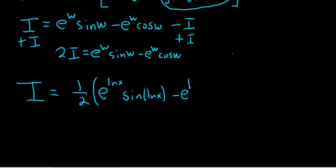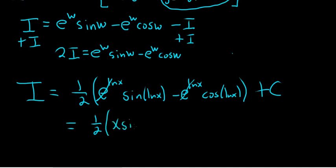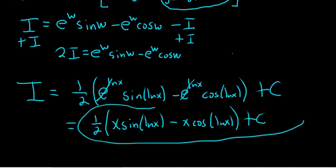This is ln x sine ln x minus o. Something cool is going to happen. I'm replacing all the w's with ln x. It's been a long time since I've done this problem, I guess, because I didn't know this would happen. But look at that. e to the ln x. That cancels. So we just get one-half x sine ln x minus x cosine ln x plus c. And you can pull out the x as well. But that is the final answer.